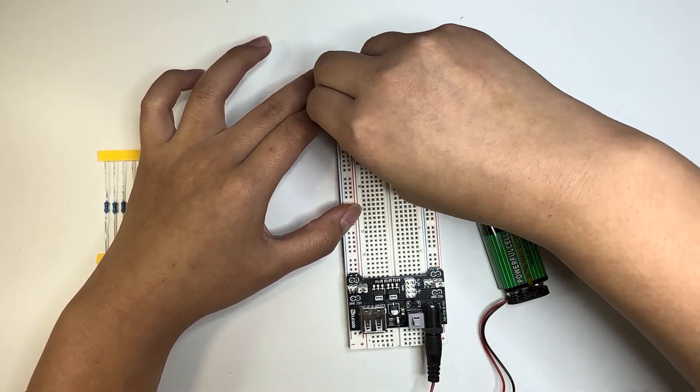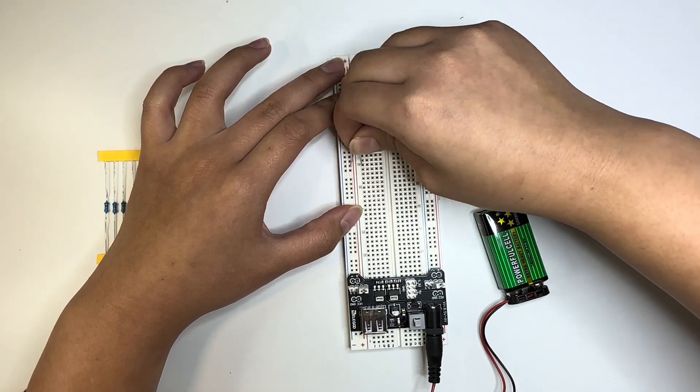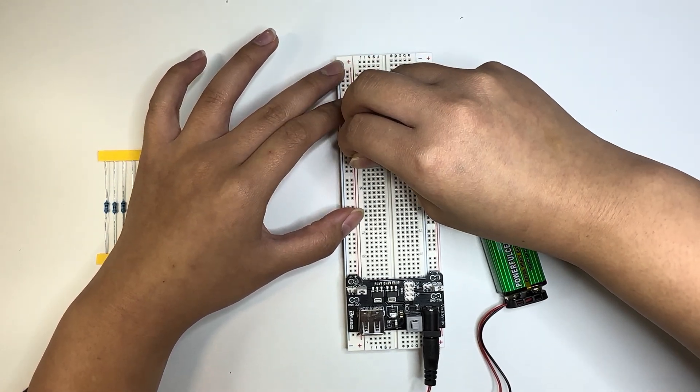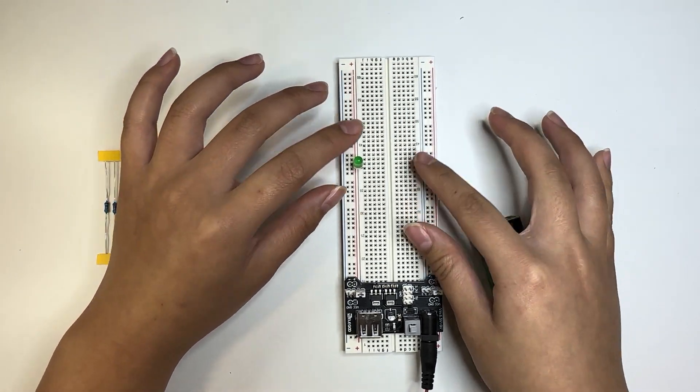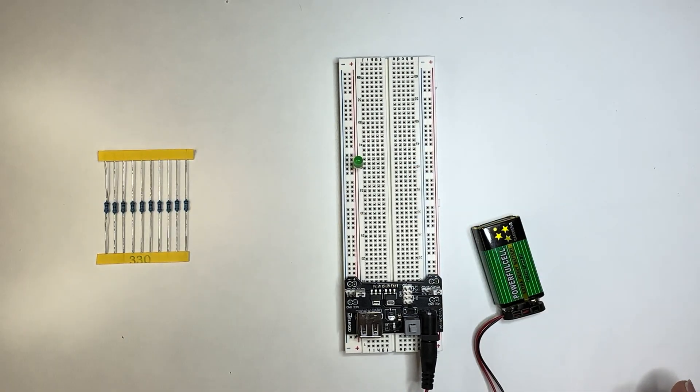I'm just going to put it by number 40 over here. And then put the negative, the cathode, into the median middle part of the breadboard, okay? Now, if you turn this on, the LED might turn on, but it's going to short.